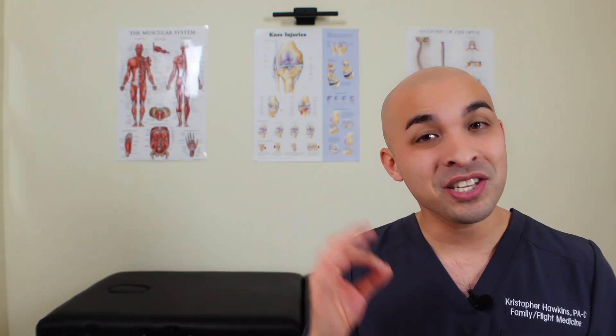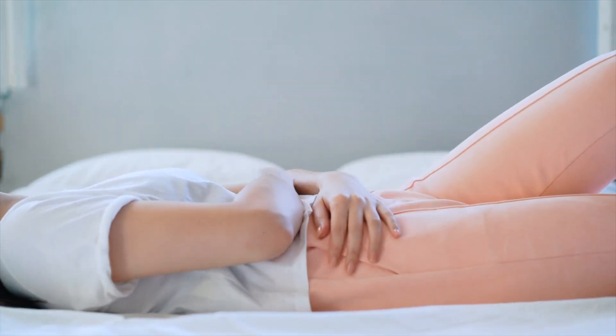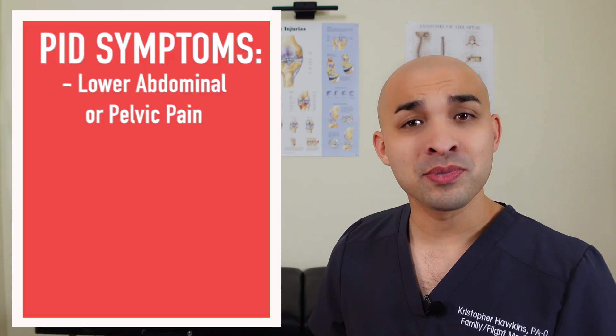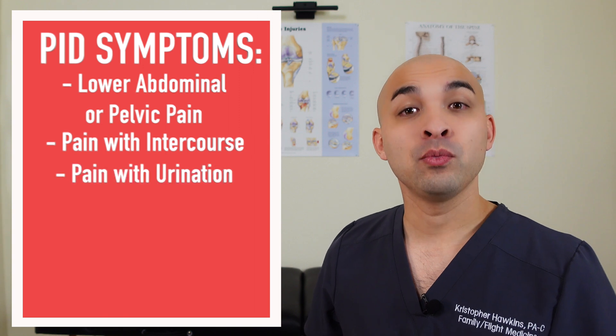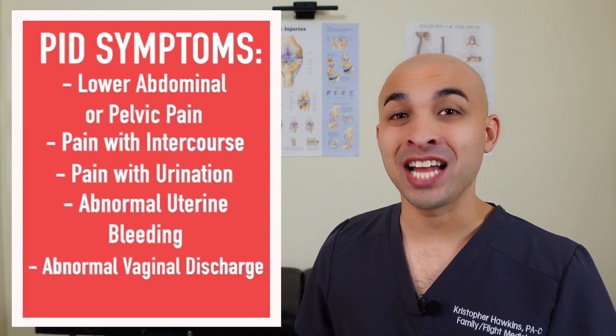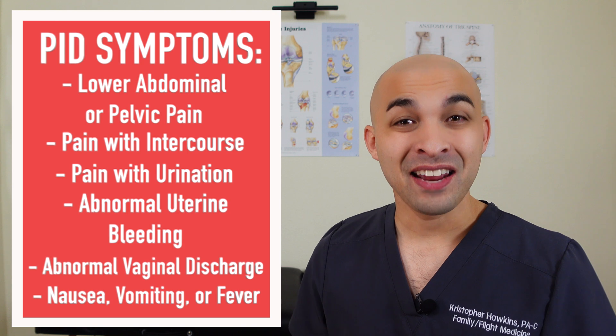The most important thing to know about pelvic inflammatory disease is the symptoms. The number one symptom people present with is lower abdominal or pelvic pain, which can be mild but abrupt in nature. Other symptoms include pain with intercourse, pain with urination, abnormal uterine bleeding, abnormal vaginal discharge, and some females may also have nausea, vomiting, and fever. Remember that some women may only have one or two of these symptoms, so if you have any concerns, see your primary care provider.